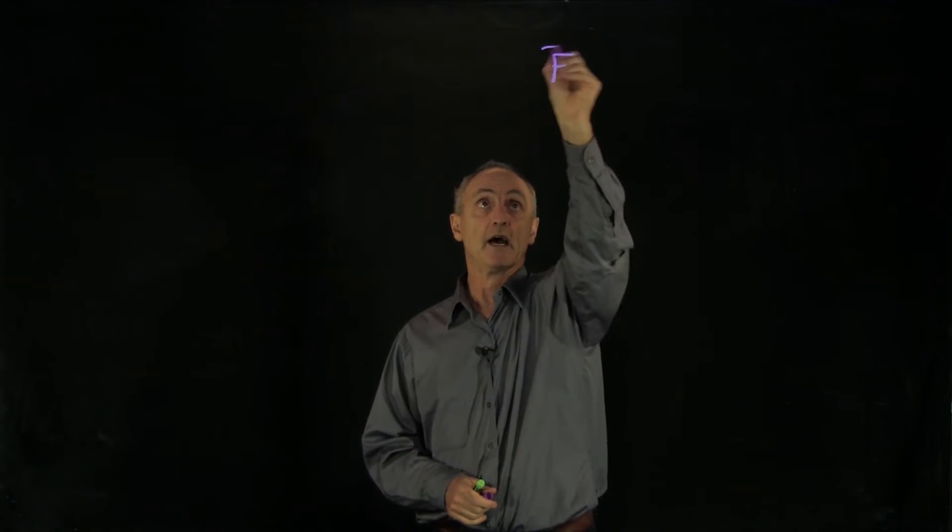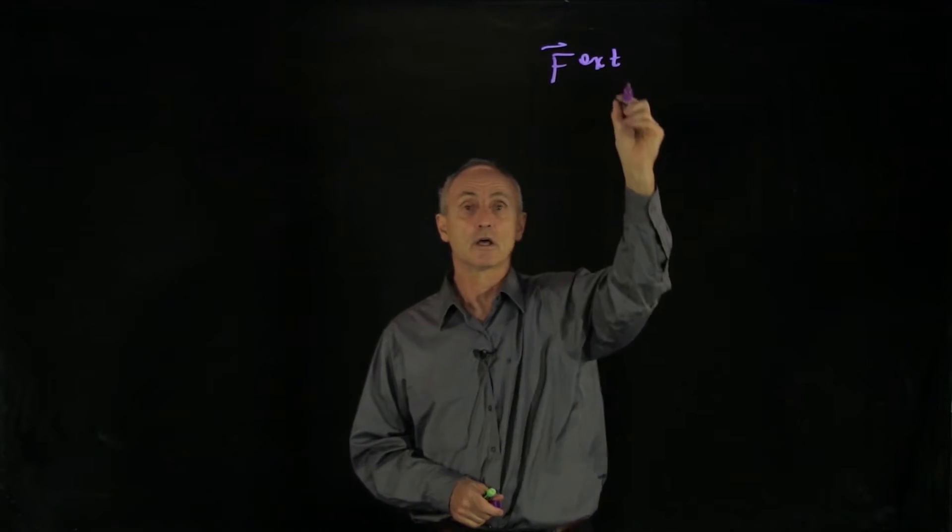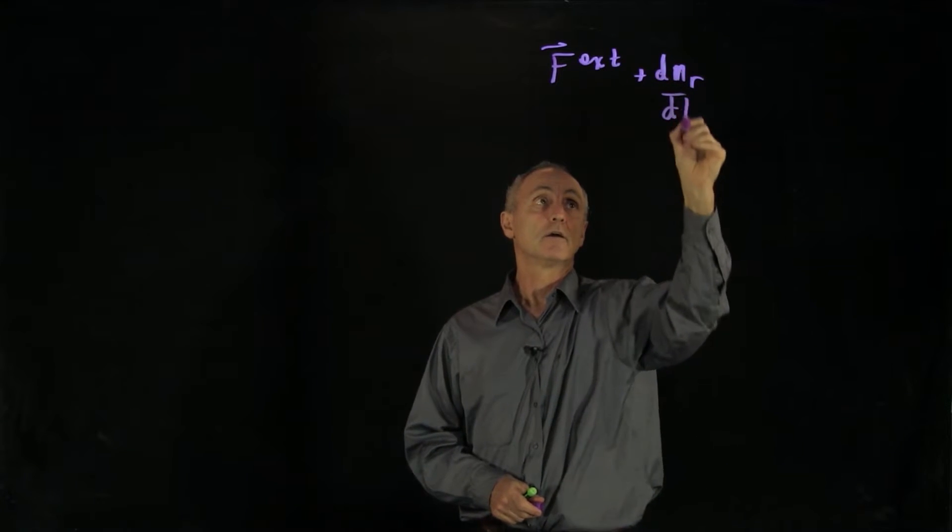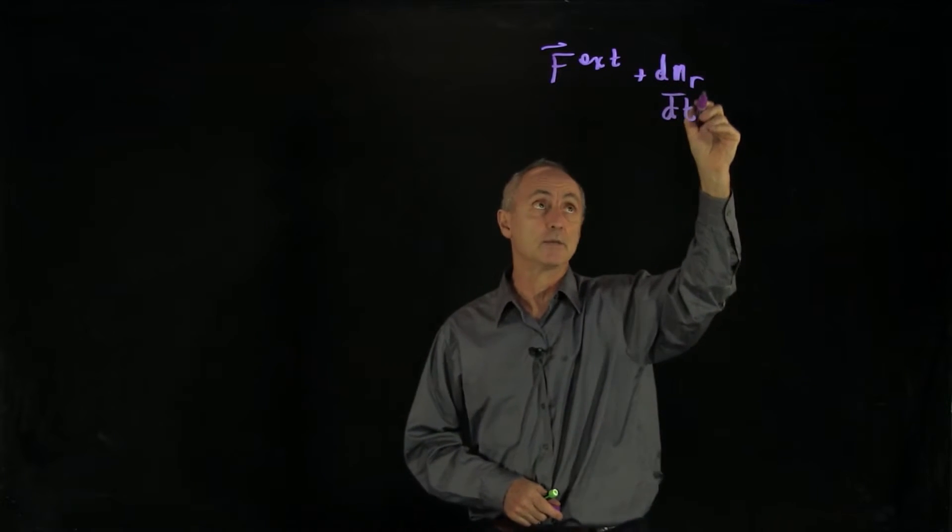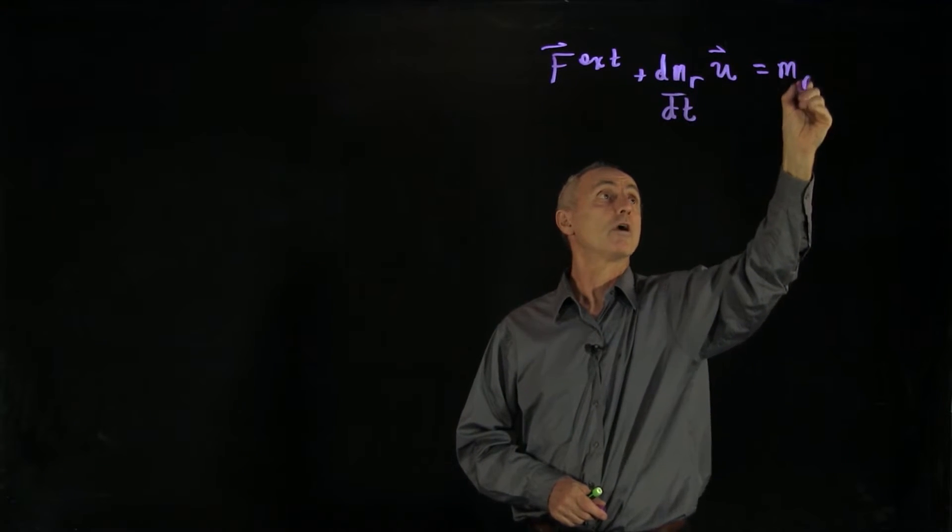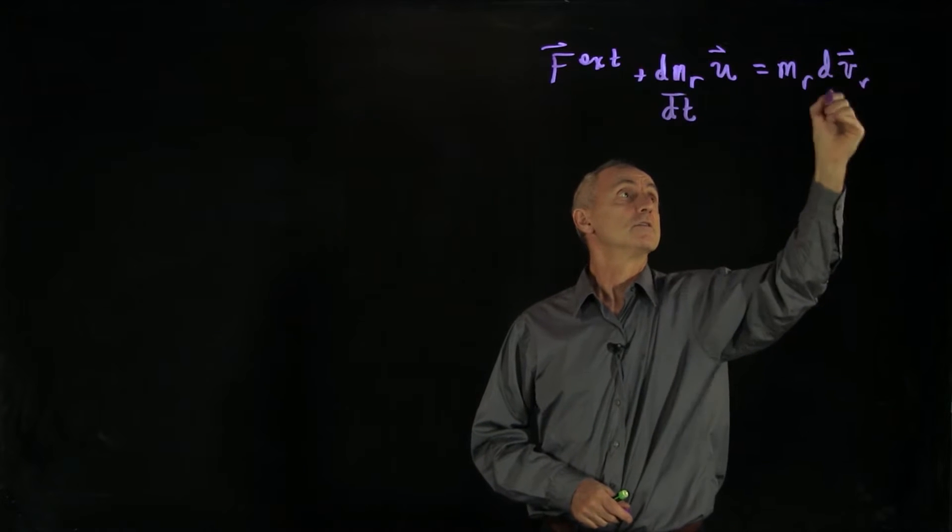We would now like to look at some applications of the rocket equation, in which we have an external force plus dm_r/dt, where m_r is the mass of the rocket at time t times the relative velocity of the exhaust velocity, equals m_r dv_r/dt.